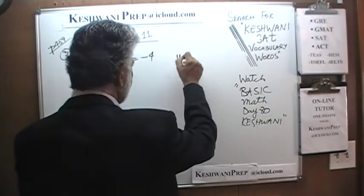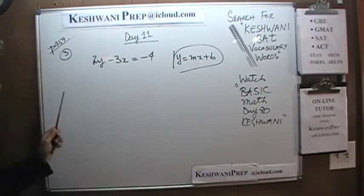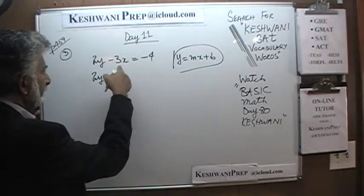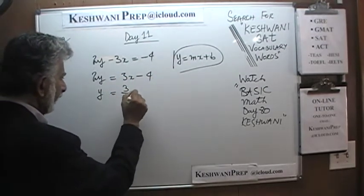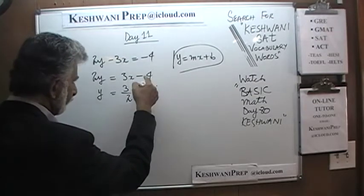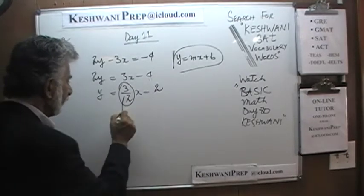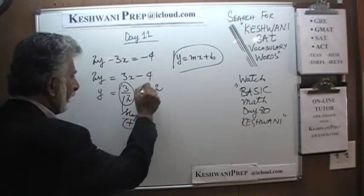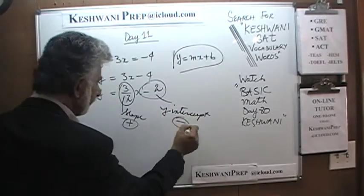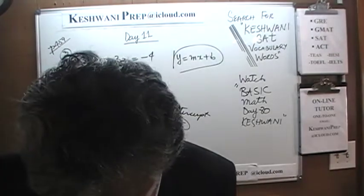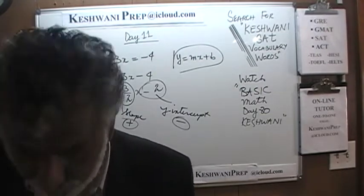The slope-intercept form is y equals mx plus b. Solving for y: 2y equals 3x minus 4, divide by 2, and y equals (3/2)x minus 2. We are not interested in the exact values — just the fact that the slope is positive and the y-intercept is negative. Pick the answer combination that fits: positive slope and negative y-intercept. That's answer choice B.